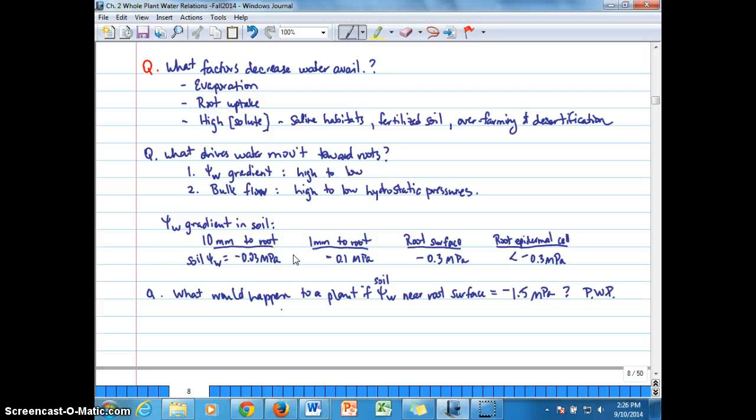Alright, so we've been looking at how water moves through the soil and how water potential of soil is going to vary across a gradient, and that's going to drive water movement towards the roots, as you can see back here in number one. Another factor that we'll look at a little bit later in another video recording is how bulk flow influences the water movement through soil. So we were reminding ourselves what the water potential gradient in soil might look like far away from the root compared to close to the root surface, and how different that would look once the water passes across the cell membrane inside the cell.